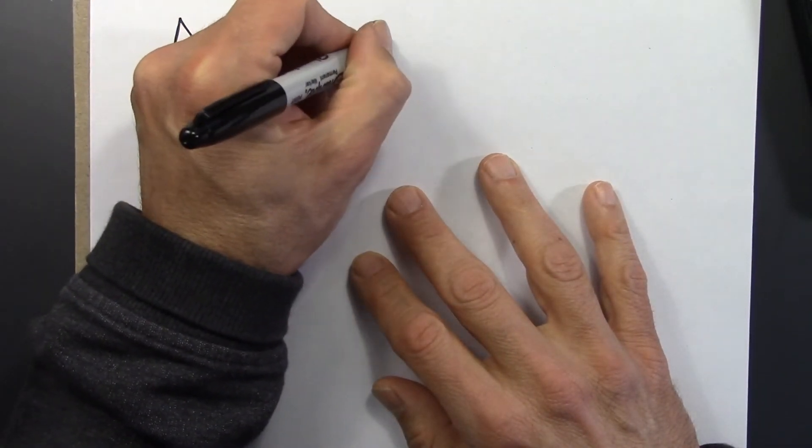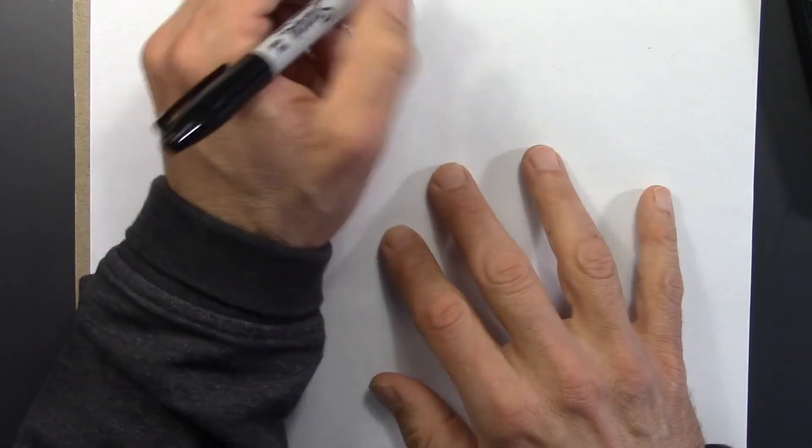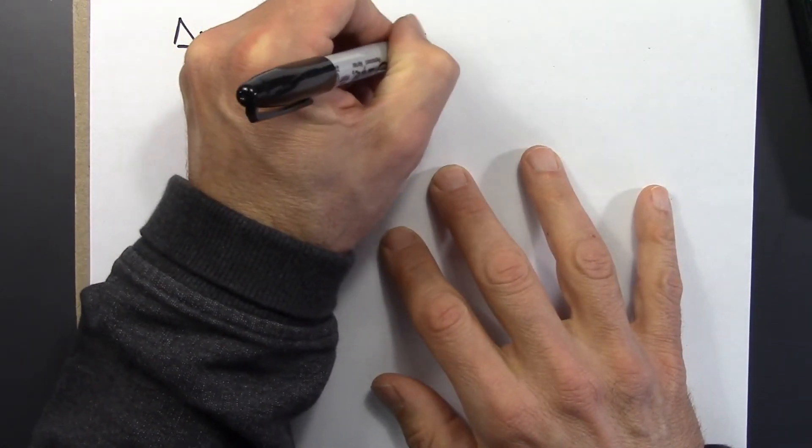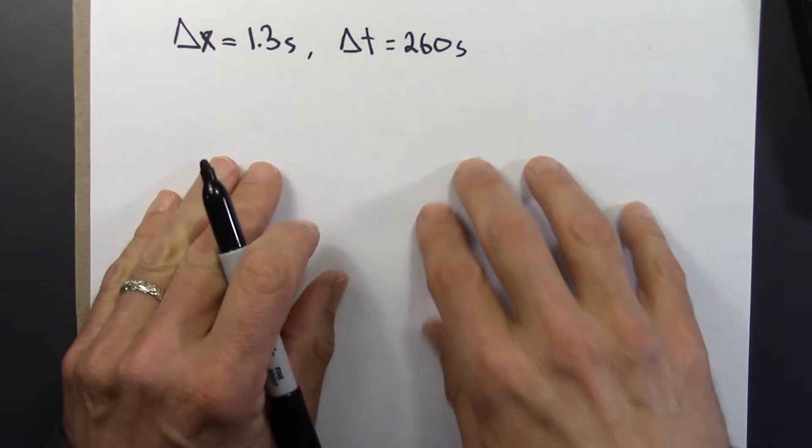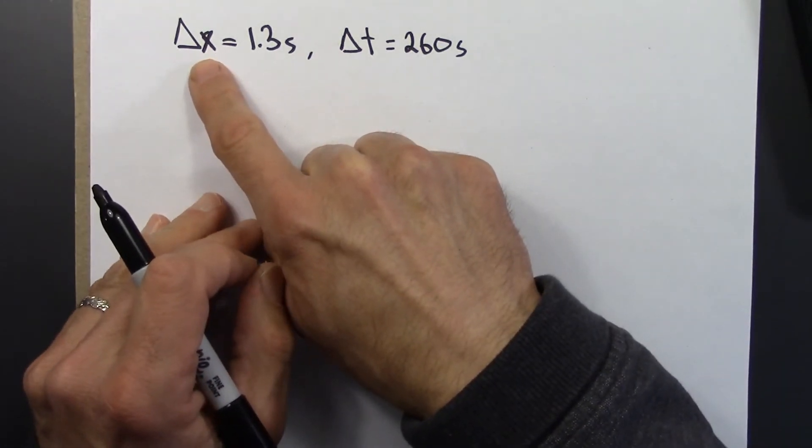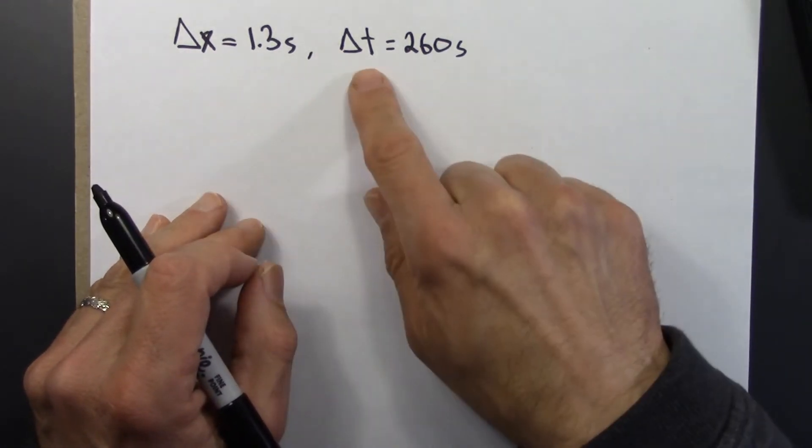The time it takes the train to make this lunar journey is 260 seconds. So this is a coordinate spatial difference and a coordinate time difference.